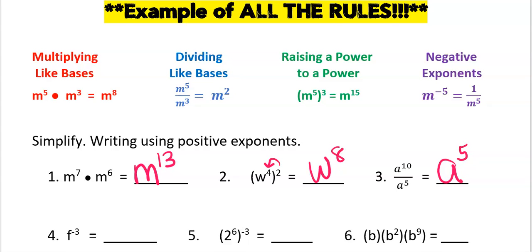Number four actually has a negative exponent. So I'm going to take the reciprocal, and now my power becomes positive.